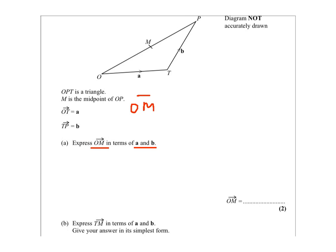So OM vector is half of OP, since M is the midpoint of OP. And what we also know is that OP equals OT plus TP.